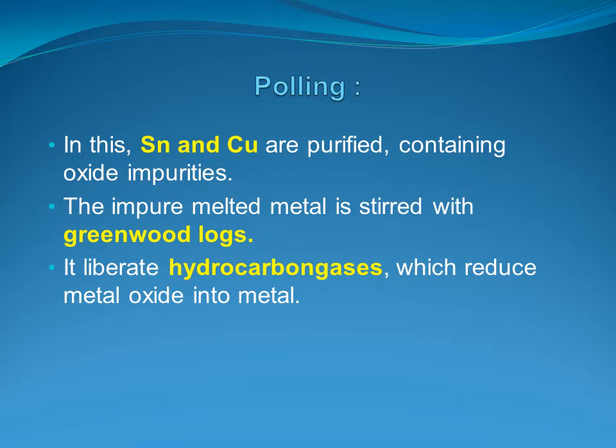The second method of refining is poling. This method is generally employed in the purification of copper or tin which contains oxide impurities. The impure metal is melted and stirred with green logs of wood. The heat of molten metal makes the green logs liberate hydrocarbon gases, which in turn reduces the metal oxide into metals. Molten impure copper contains 98% purity and becomes 99.5% pure after the poling process.